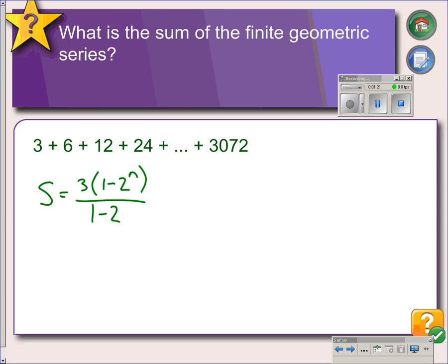So to find the number of terms, we have to use our formula for a sequence, which is a sub n equals a sub 1 times r to the n minus 1. So we're trying to find this last term, 3,072, how far into the sequence is it?